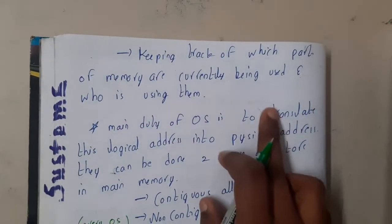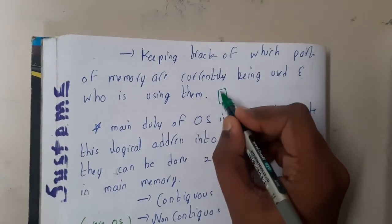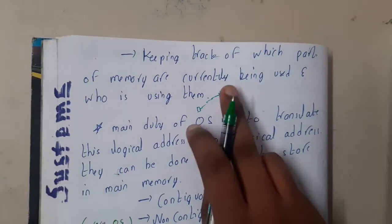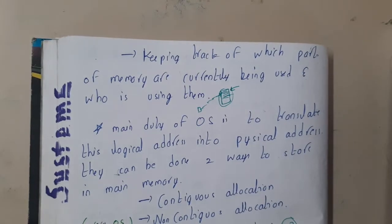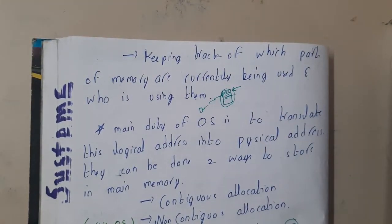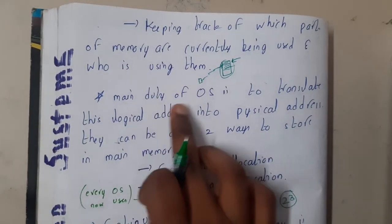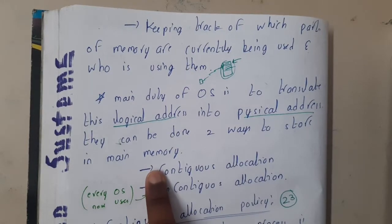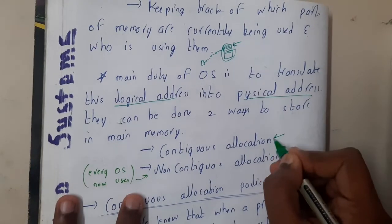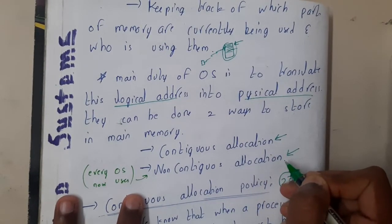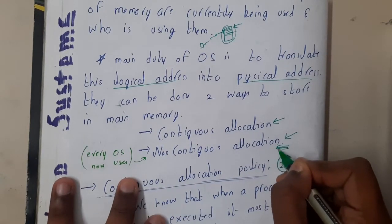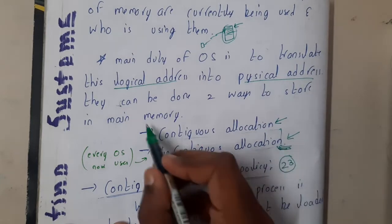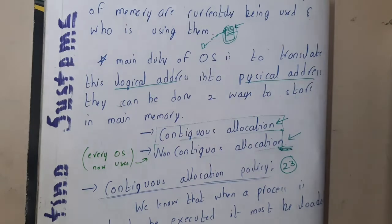The OS also keeps track of which parts of memory are currently being used. For example, if one application is using a section of main memory and the OS assigns that same area to another application, it will cause issues. So the OS tracks which slots are empty, which are used, and who is using them. Additionally, data can be stored in main memory in two ways: contiguous allocation, and non-contiguous allocation. Paging, segmentation, multi-level paging all fall under non-contiguous allocation, while contiguous allocation covers algorithms like best fit and first fit.